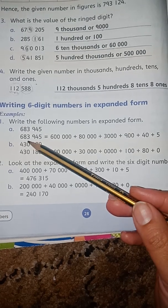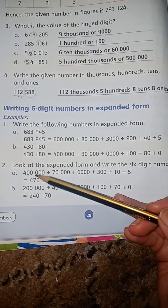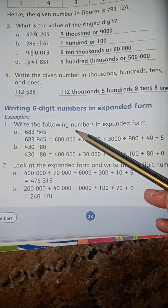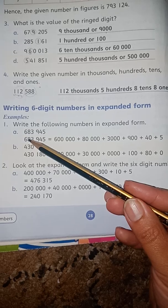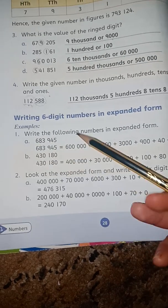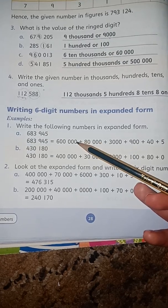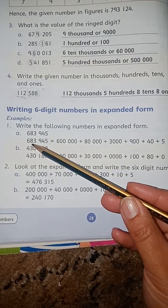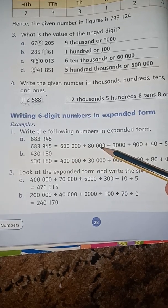So part A, we have 683,945. Students, the first digit is 6 with 5 digits remaining, so we write 600,000 plus the next digit 8 with 4 zeros: 80,000.